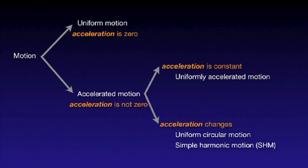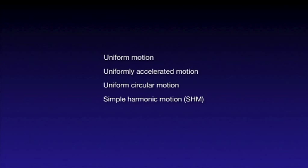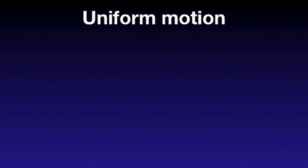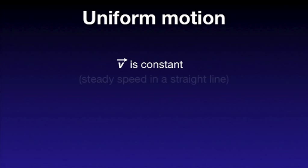Let's now concentrate on the four examples: uniform motion, uniformly accelerated motion, uniform circular motion, and simple harmonic motion, identifying their main features in each case. Uniform motion is characterized by the fact that the velocity vector does not change during the motion — the motion is at a steady speed and in a straight line. Since acceleration is defined as the rate at which velocity changes in time, and the velocity does not change here, there is no acceleration.